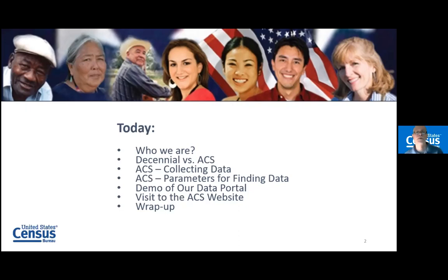What I'm going to do today is talk about who we are at the Census Bureau very quickly — that's a 30-second slide. Then talk about the decennial, which we've just been through — the 2020 Census — and the American Community Survey, which we call ACS. I'll explain a little about how we collect data for the ACS and what parameters you need to find data, what filters to set. Then I'll give a demo on the data portal, show you the ACS website, and then take any questions at the end.